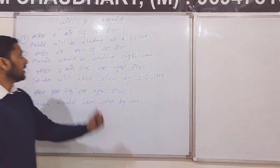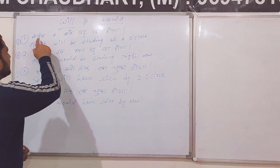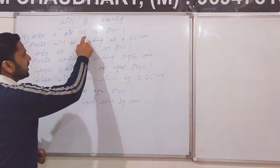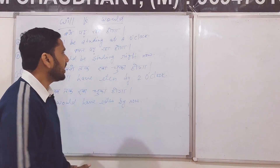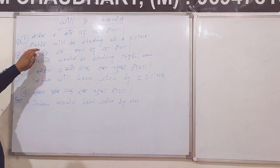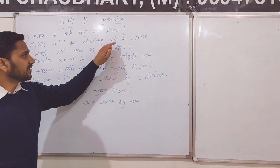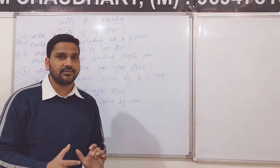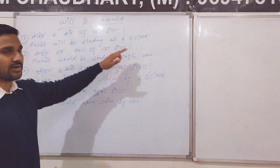Do you see? The first sentence uses Will, and we use it — for example, at 4 o'clock. So when we are talking about a future action, we use Will.